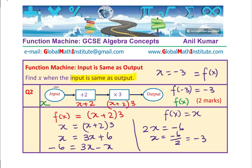If the input is minus 3, then what is minus 3 plus 2? Minus 3 plus 2 is minus 1. When I multiply by 3, then minus 1 times 3 is minus 3. So we see the output is also minus 3. Make sense? We have understood clearly how do we solve such questions when input is same as output. What is the value of x?